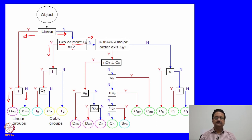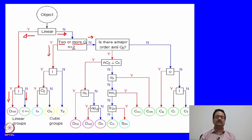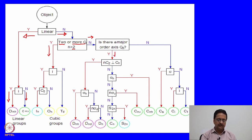I am not going to elaborate so much here because I am going to take some examples. When you do not have 2 or more Cn axes with n greater than 2, we come to the next question: is there a major order axis Cn? Does the molecule contain a Cn — a C2, C3 or C4? Only one of them should be present. If the answer is yes, we come down. If the answer is no, we go towards the right.